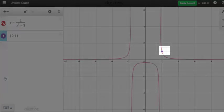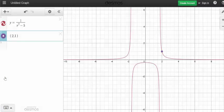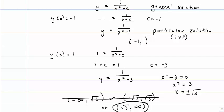So here's my initial value, that's at 2 comma 1, so it looks like my third interval is where this solution is valid. So that solution is valid from square root of 3 to positive infinity.